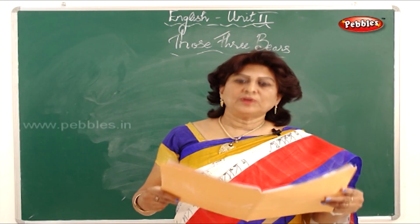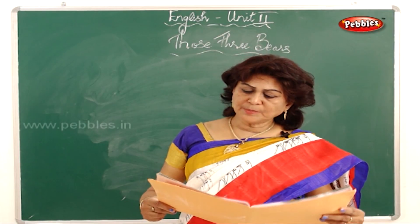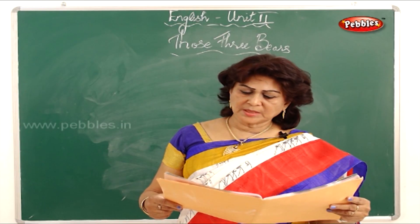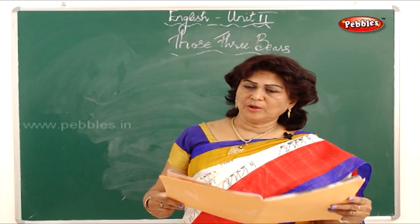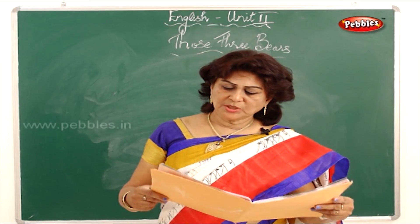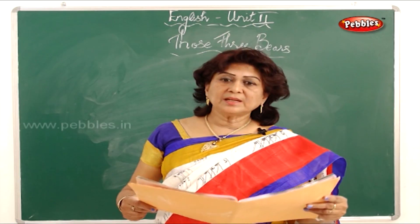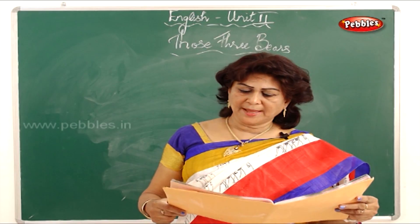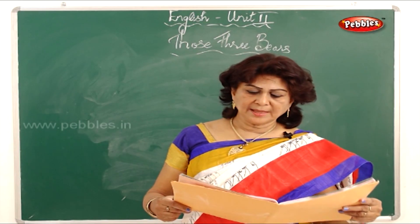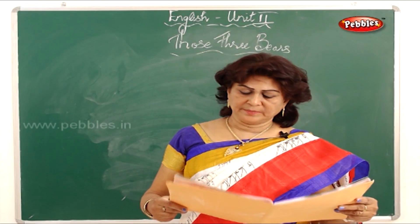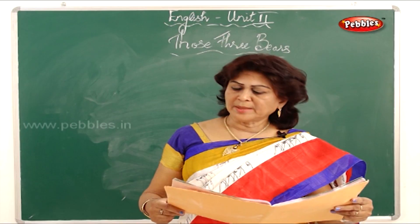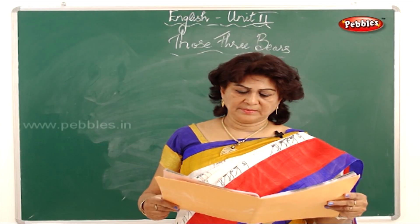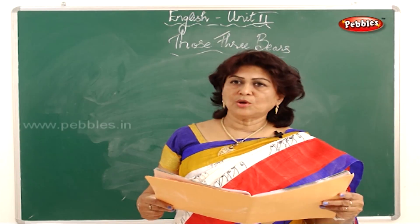Now circle the adverbs in the following paragraph. Today I helped my mom cook dinner. We carefully cut the vegetables and slowly placed them into a boiling pot of water. We patiently let them cook through. I eagerly waited for my next job, which was to gently sprinkle spices into the soup. But I accidentally poured in too much cumin. I quietly told my mom my mistake and she told me that as a child she had made some mistakes too.